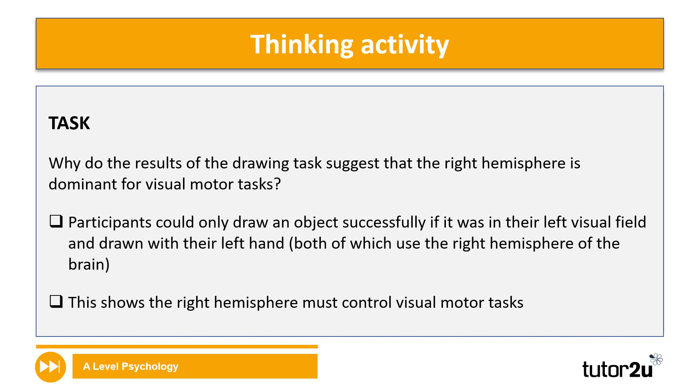Here's some of the things you definitely need to include. Participants could only draw an object successfully if it was in their left visual field and drawn with the left hand. Both of those things, the visual field and the left hand, would be using the right hemisphere of the brain. So since the right hemisphere of the brain was processing the information and they could successfully draw, this shows the right hemisphere must control visual motor tasks.